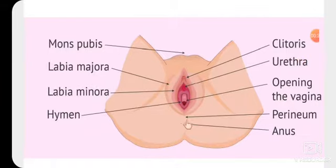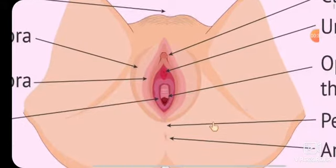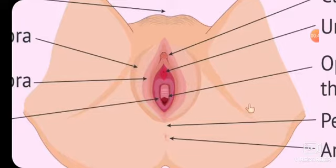Labia majora and labia minora are two folds, and labia minora anteriorly forms the clitoris and forms a triangular space called the vestibule. In the vestibule, there are two openings: urethral opening and vaginal opening. Through the urethral opening, urine passes, and through the vaginal opening, menstrual blood is lost during the menstrual cycle.